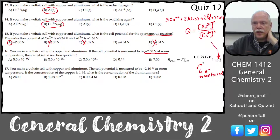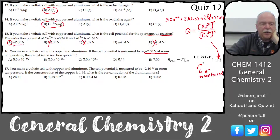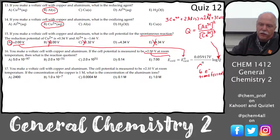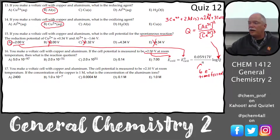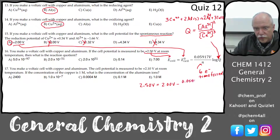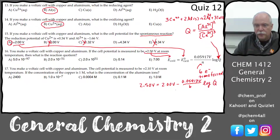We're going to solve for Q. E cell is the potential when all concentrations are 1 molar. If you're given the equation but you don't know where all the pieces go, the equation doesn't help you. So: 2.50 volts equals 2.00 volts minus (0.05917 volts / 6) × log Q. We've got to solve for Q — a lot of algebra to do.